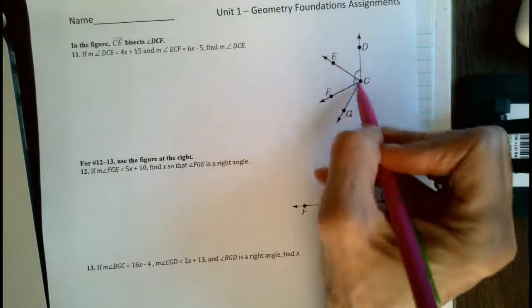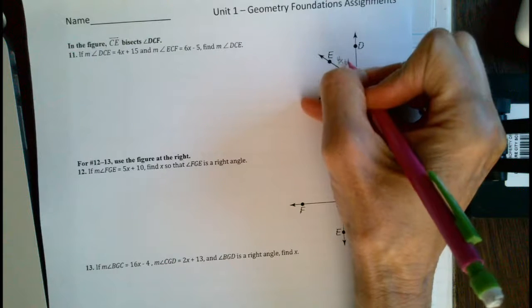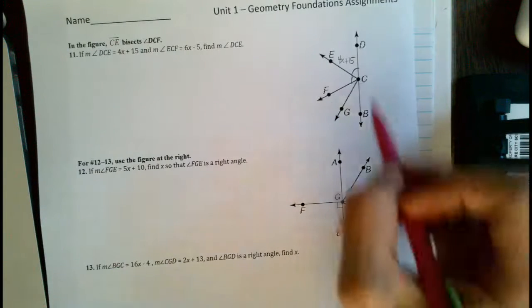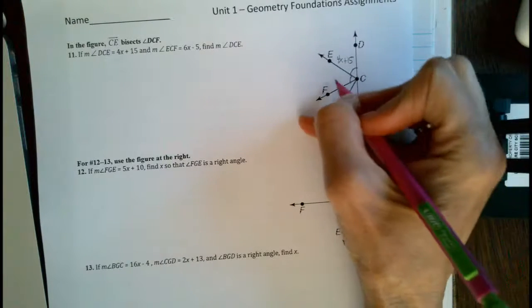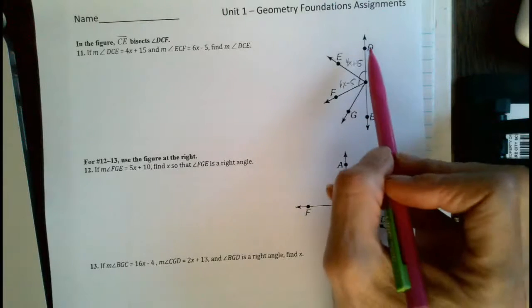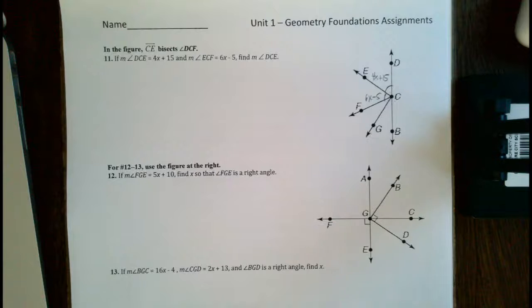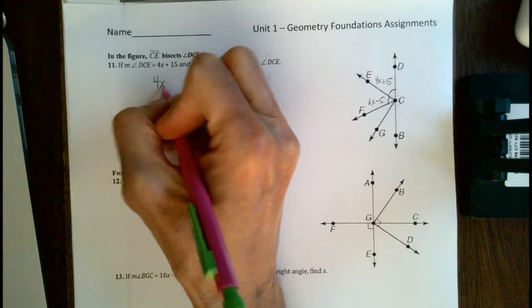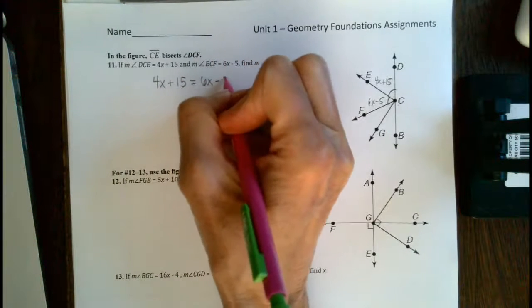So DCE is 4x plus 15, and ECF is 6x minus 5, and then we want to find the measure of angle DCE. So first of all we need to figure out how big is x, and once again, 4x plus 15 is going to be equal to 6x minus 5.